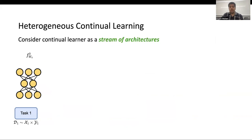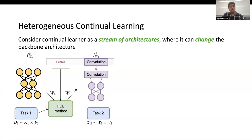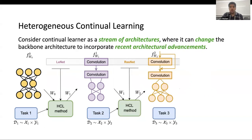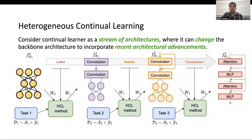Therefore, we relax this assumption and adopt something flexible. Let's consider the setup of Heterogeneous Continual Learning, where for the first task we assume an MLP. For the second task, we introduce the convolution layers — that is, we introduce the LeaNet architecture. For task 3, we use ResNet. And for task 4, we are using transformers. This adaptation is very likely possible in practice because we often want to keep the state-of-the-art architecture in deployment.